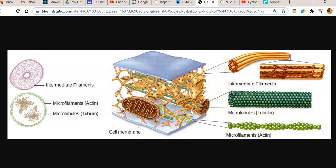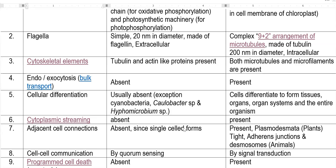The next point relates to the transport of molecules inside the cell — that is, endocytosis and exocytosis, commonly referred to as bulk transport. Bulk transport, which refers to endocytosis and exocytosis, is a common feature in eukaryotic organisms. Such kinds of transport are completely lacking in prokaryotes.